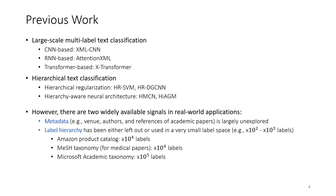Second, the label hierarchy has either been left out or used in a very small label space. For example, in previous works, they usually use several hundred to several thousand labels. However, in real cases like the Amazon product catalog or the MeSH taxonomy for medical papers, the label hierarchy has tens of thousands of labels. And for Microsoft Academic taxonomy, the size is even larger—it has hundreds of thousands of labels.